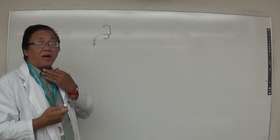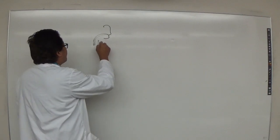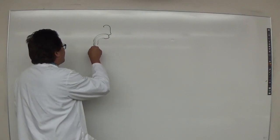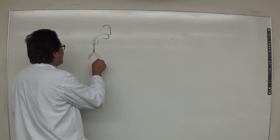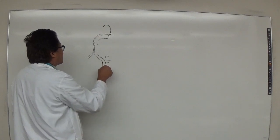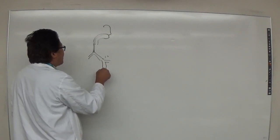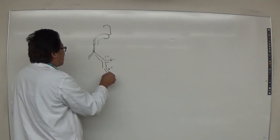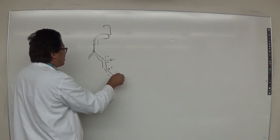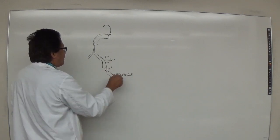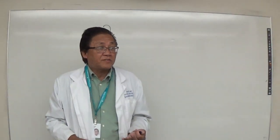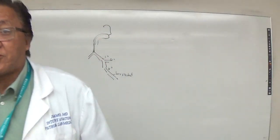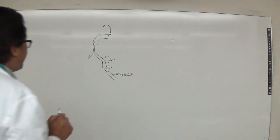In front of the neck, that corresponds to your thyroid cartilage. Then of course you have your trachea, which divides into a primary bronchus, then secondary bronchus, then tertiary bronchus, and then the bronchioles. The reason they're called terminal bronchioles is because they're found at the end.